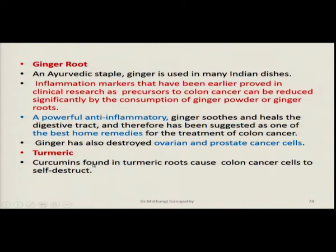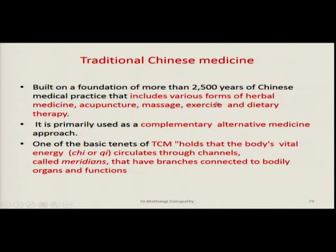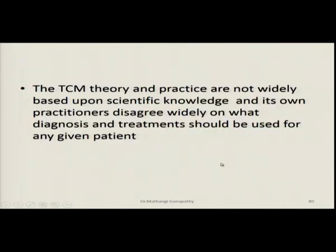Now let us see the peculiarities of traditional Chinese medicine. Built on a foundation of more than 2500 years, traditional Chinese medicine or TCM includes various forms of herbal medicine, acupuncture, massage, exercise, and dietary therapy. It is primarily used as a complementary alternative therapy. One of the best tenets of TCM holds that the body's vital energy — otherwise called chi — circulates through channels called meridians that have branches connected to the bodily organs and functions. TCM theory and practice are not clearly based on scientific knowledge, and its own practitioners actually widely disagree on what is the diagnosis, what is the prognosis, and what should be the treatment for a particular patient.